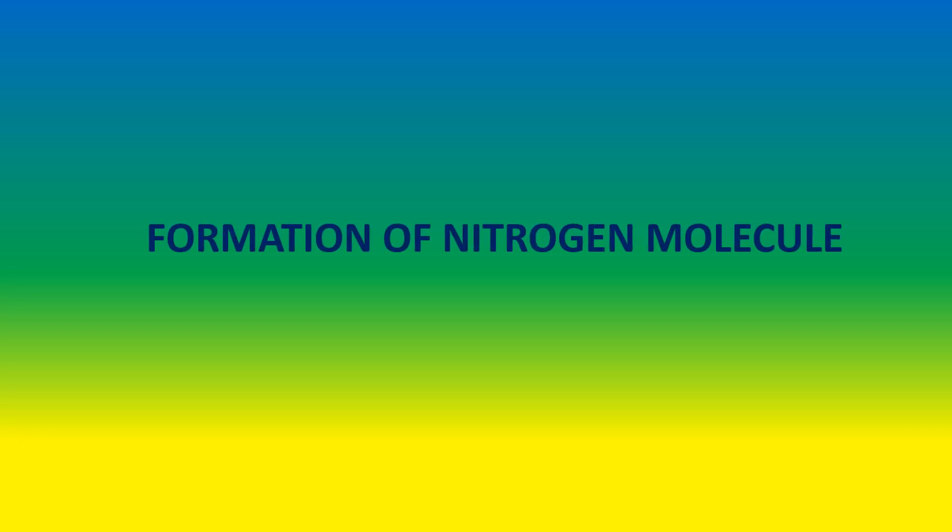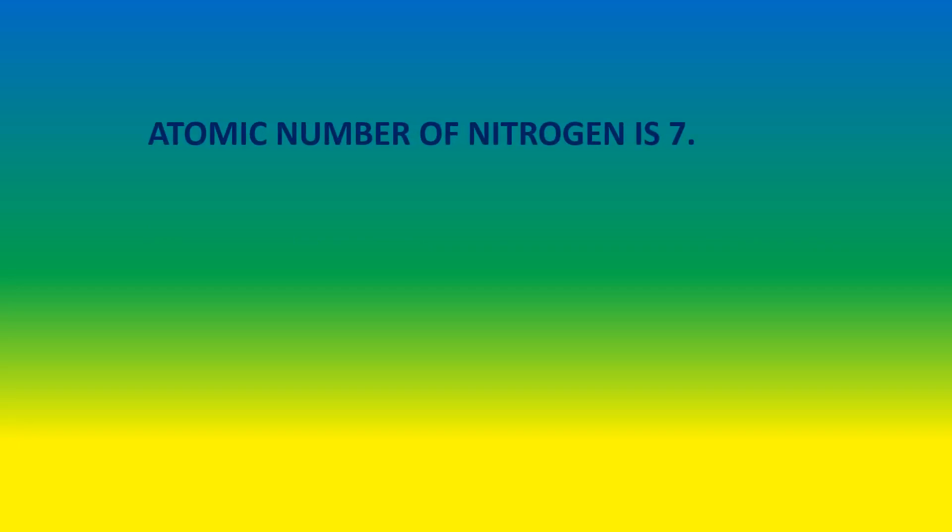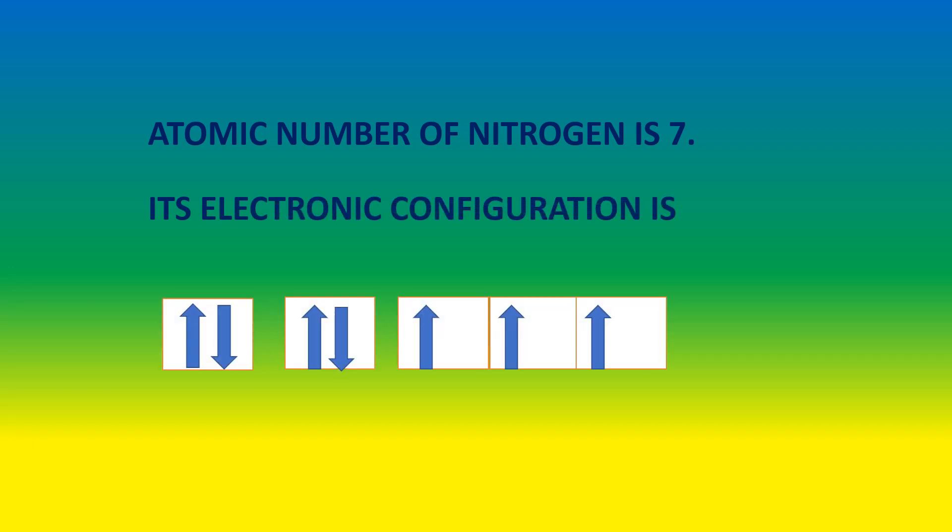Formation of nitrogen molecule. Atomic number of nitrogen is 7. Its electronic configuration is 1s2 2s2 2px1 2py1 2pz1.